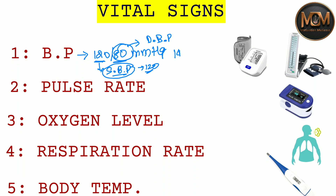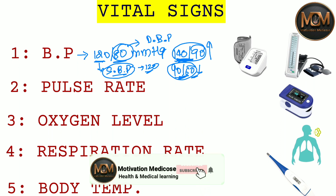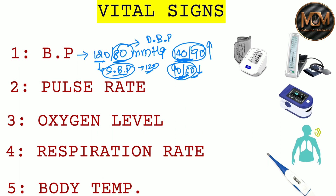The normal value is 120/80. Once you see a value of 140/90 or above, it can be considered hypertension — meaning the BP is high. And if you see 90/60 or just below that value, it can be considered hypotension. So from this, we can easily assess the BP.